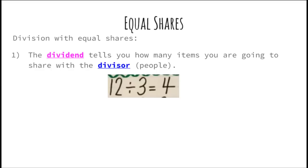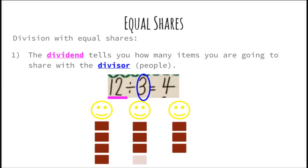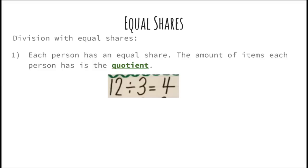Division with equal shares — the dividend tells you how many items you are going to share with the divisor, which are the people. 12 divided by 3 equals 4. The 3 is your divisor and the 12 is your dividend. We distribute 12 items — counting 1 through 12 — equally among the 3 people. Each person got 4 brownies, and that's how you got your quotient of 4.